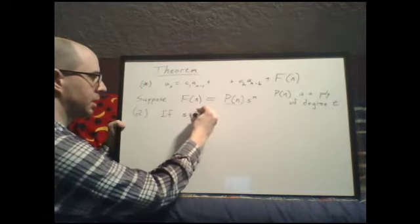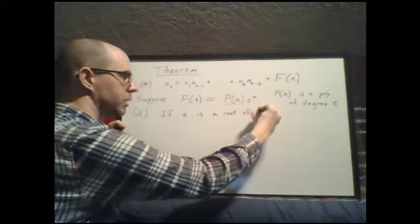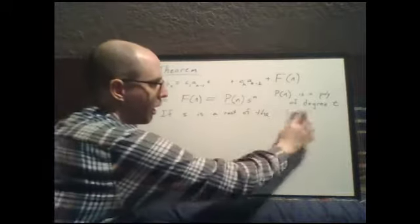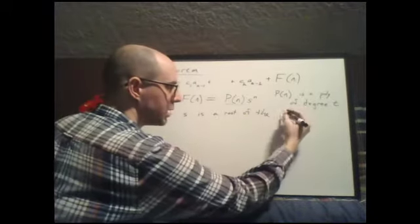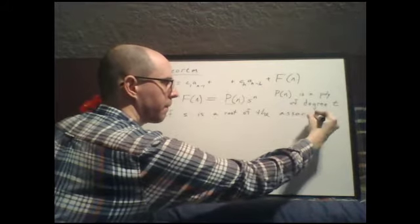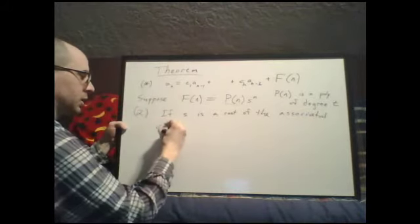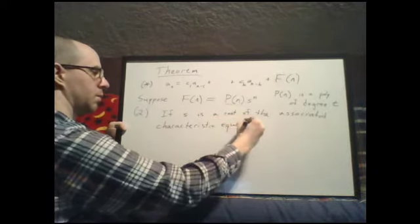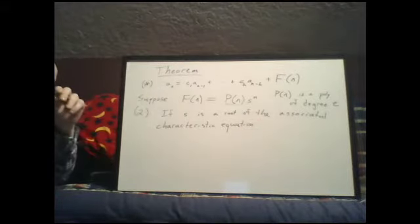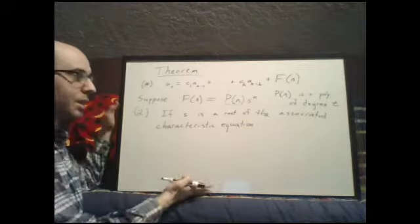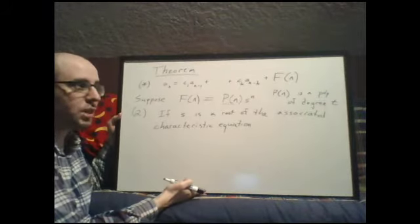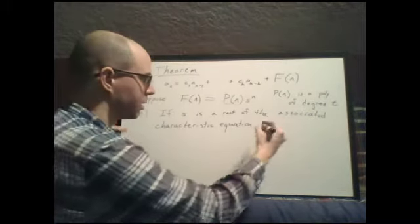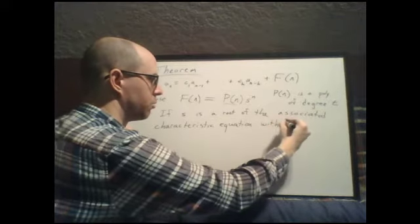If s is a root of the associated characteristic equation, that leads to another question: it's a root of some polynomial equation, so it has a multiplicity. Let's give a name to that multiplicity — call it m.